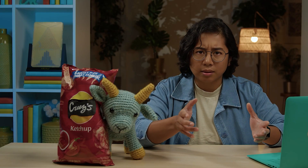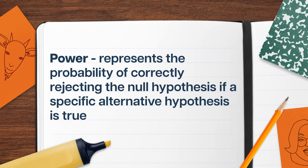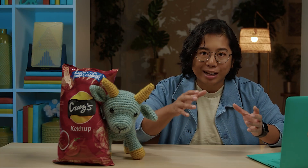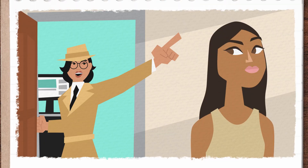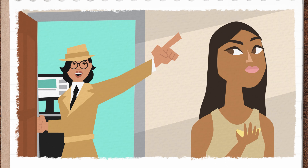A lot can go wrong in statistical tests, but a lot can also go right. Power represents the probability of correctly rejecting the null hypothesis if a specific alternative hypothesis is true — and that's a good thing. It means we're capturing a real difference and getting closer to understanding the truth. So if my search resulted in me accusing Melissa and she actually is the chip stealer, that would be an event that counts toward the power. We want this kind of scenario to be very likely. Sorry, Melissa.